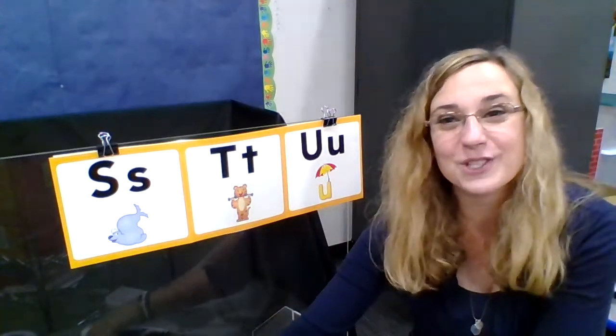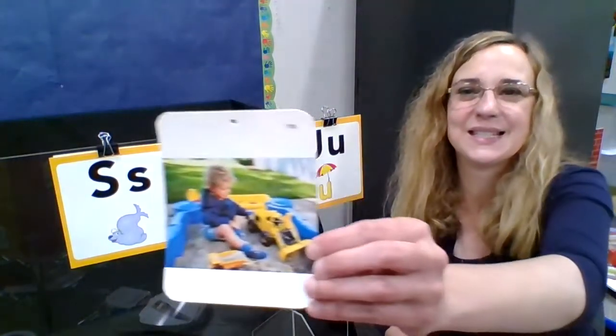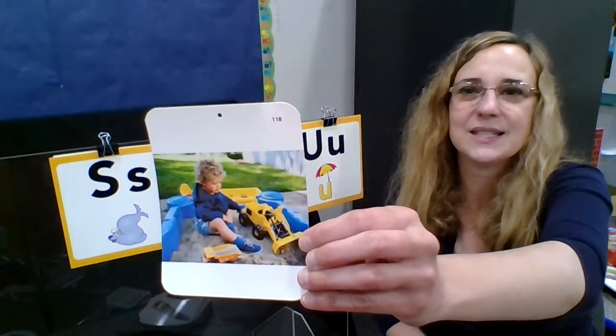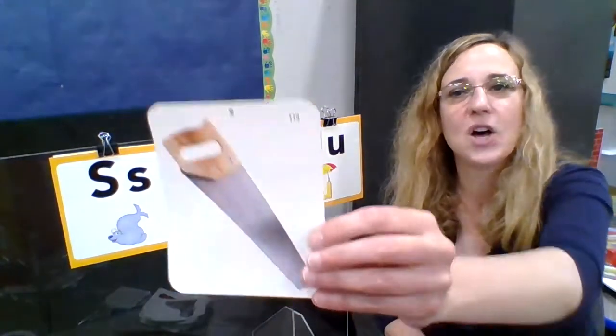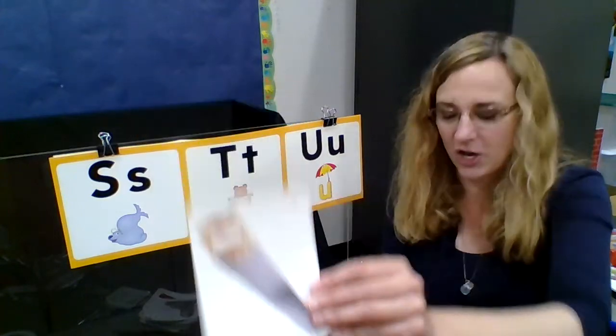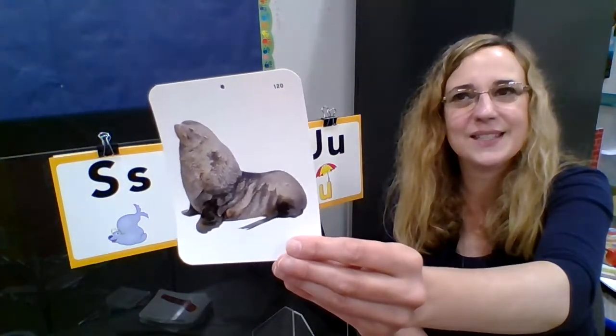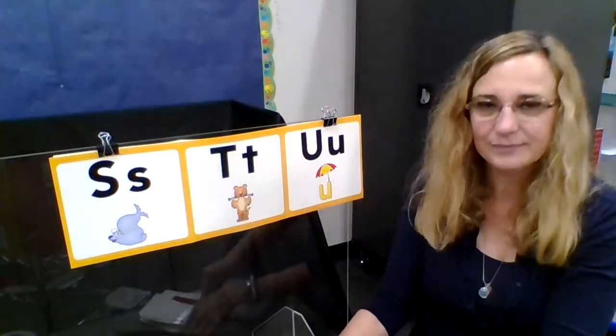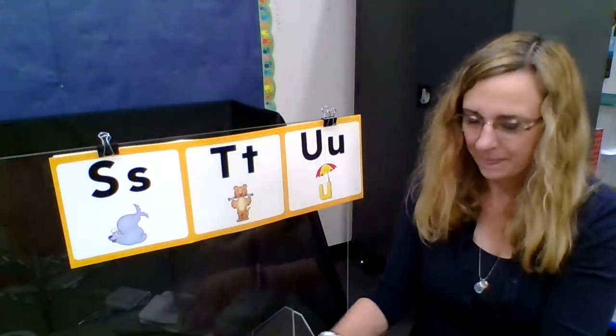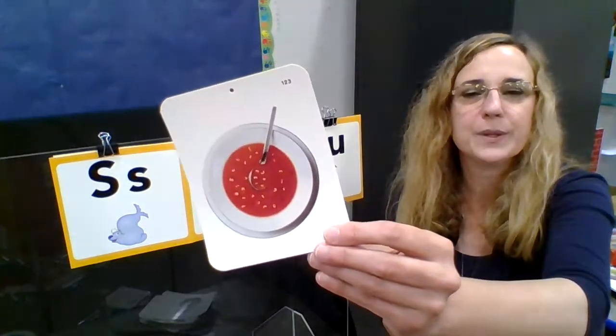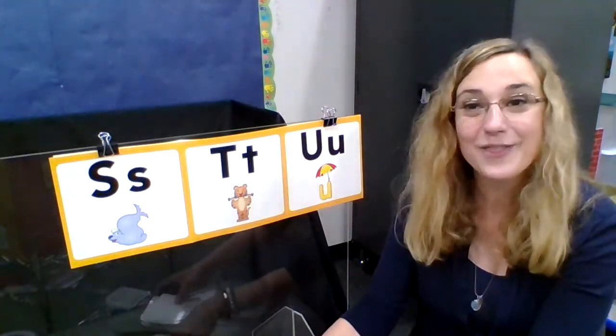Let's go over some of our S words, words that start with S. Sss, sandbox, sss, sandbox. Sss, saw, sss, saw. Sss, seal, sss, seal. Sss, sock, sss, sock. Sss, soup, sss, soup. And those are our S words.